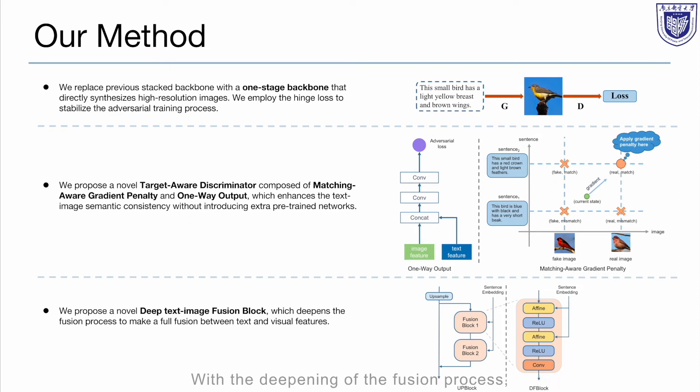With the deepening of the fusion process, the DF block brings two main benefits for text-to-image generation. First, it makes the generator more fully exploit the text information when fusing text and image features. Second, deepening the fusion process enlarges the representation space of the fusion module, which is beneficial to generating semantically consistent images from different text descriptions.